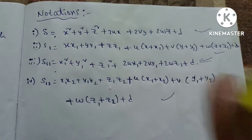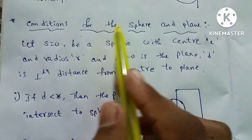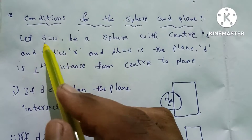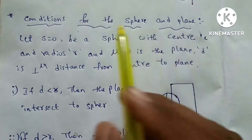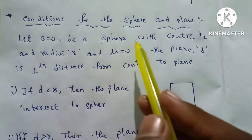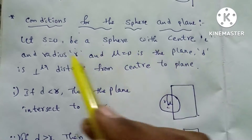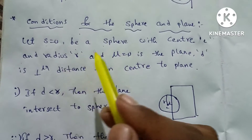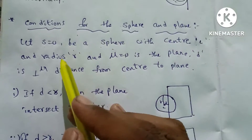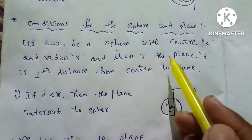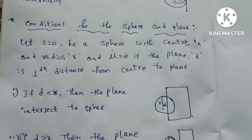These are the conditions for the sphere and plane. Let S equal to 0 be a sphere with center C and radius R. Mu equal to 0 is the plane. D is the perpendicular distance from the center C to the plane.